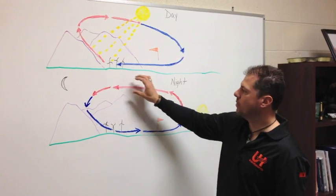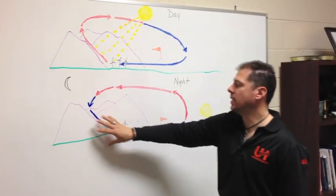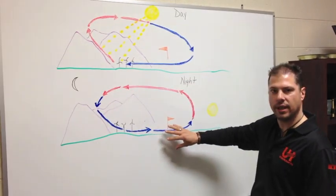As it circulates around, it's going to get to the mountain area, and then it's going to cool, and it's going to come down back into the valley as a mountain breeze.